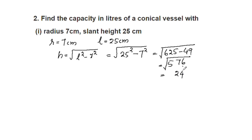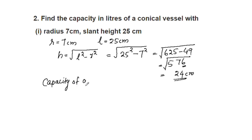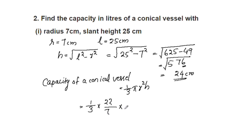So h = 24 cm. Now we find the capacity: Volume = 1/3 × π × r² × h = 1/3 × 22/7 × 7 × 7 × 24. The 7 in the denominator cancels with one r, and 3 divides into 24 giving 8.